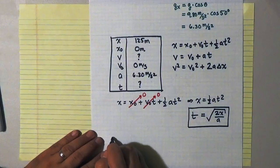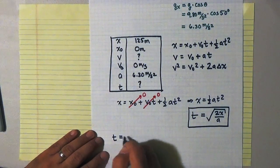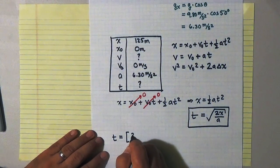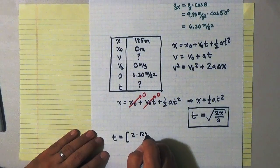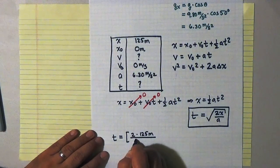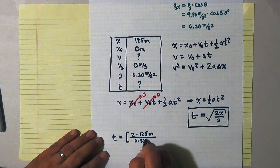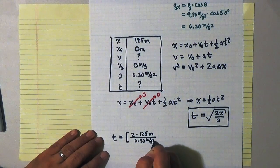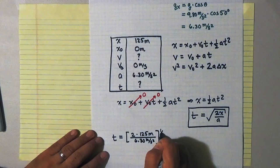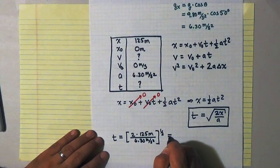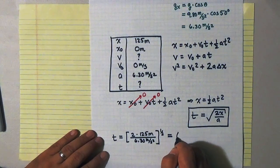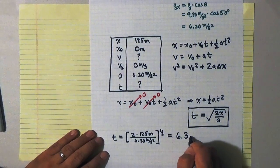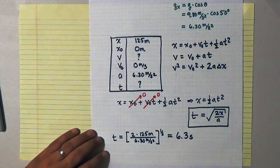So if I numerically evaluate that, t is equal to 2 times 125 meters divided by 6.30 meters per second per second, all of that to the one-half power. And if I work that out, I find that t, quite by coincidence, is 6.3 seconds.